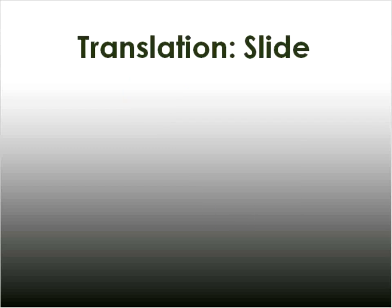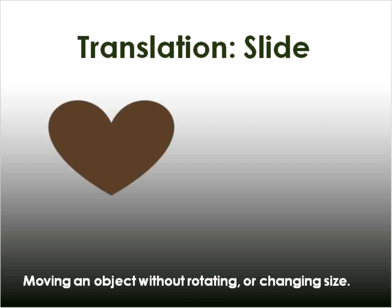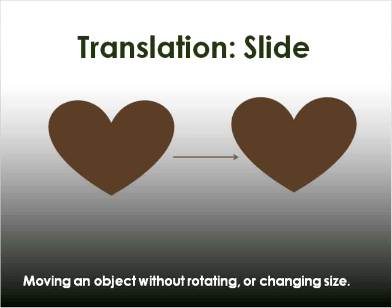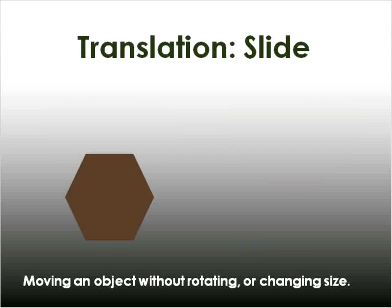Translation or the slide. It's like the electric slide, only not quite so musical. This is when you move an object without rotating or changing its size. So if I have this beautiful heart and I move it, it's exactly the same size. I'm just sliding it over. That's all translation is. So I'm going to take this hexagon and I'm going to slide it up to there. That's what translation is. It keeps the same size and you don't rotate it at all.